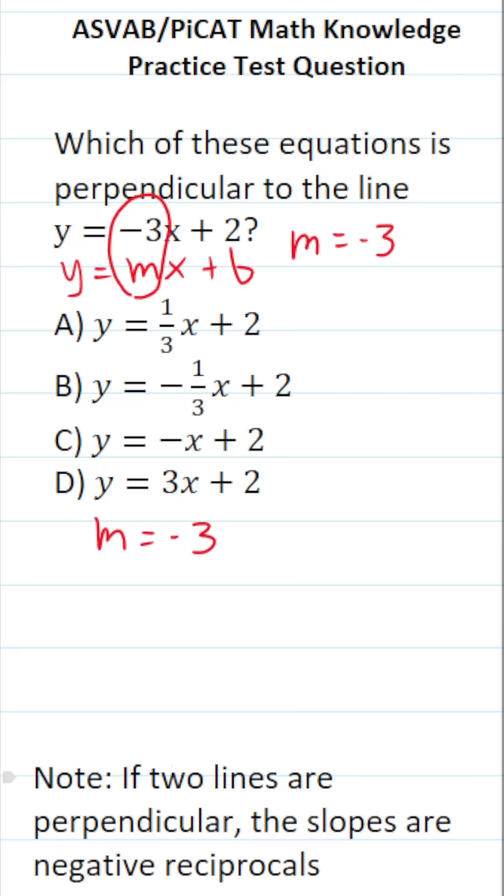Now, I also want to mention that if two lines are perpendicular, their slopes are negative reciprocals. So in other words, we've got to find the negative reciprocal of negative 3.